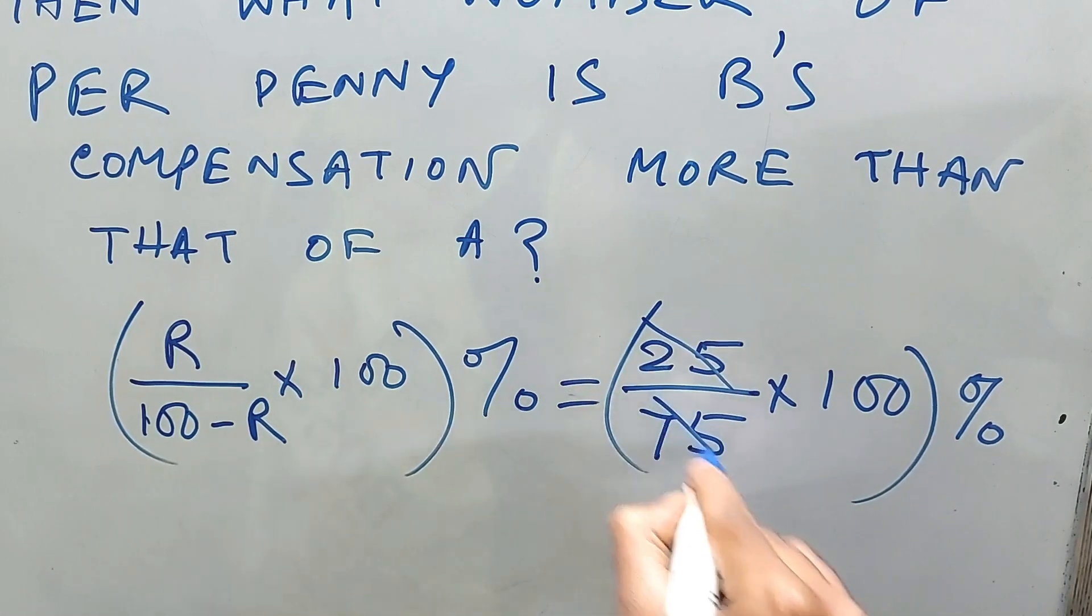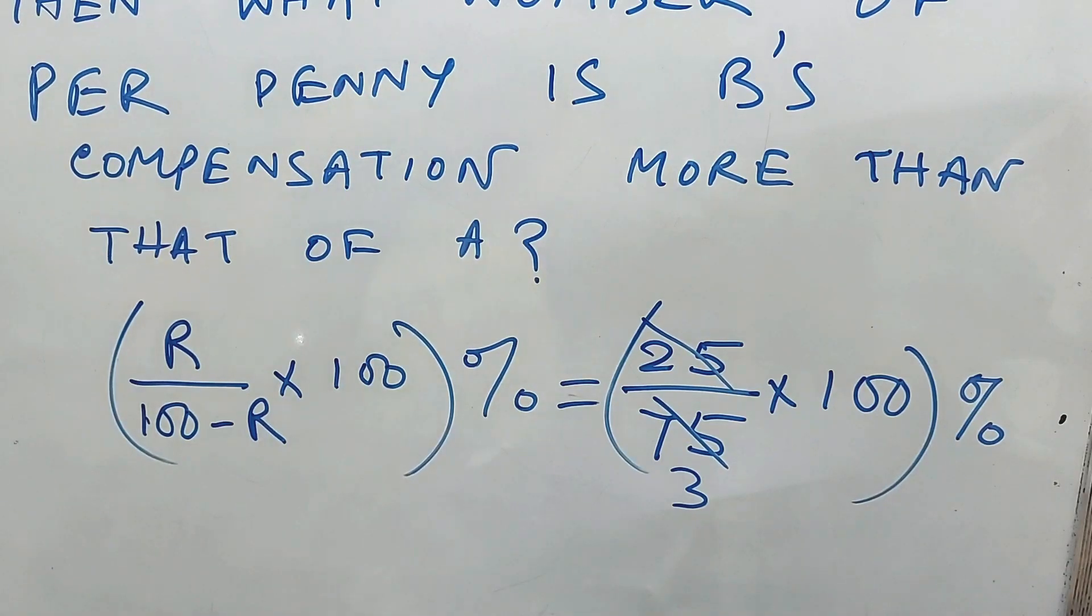Now, 25 by 75 is 1/3, right? So 1/3 times 100 is your answer: 100 by 3.